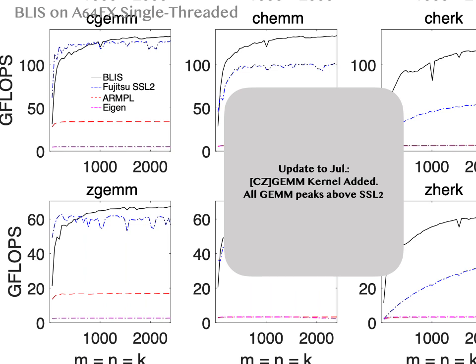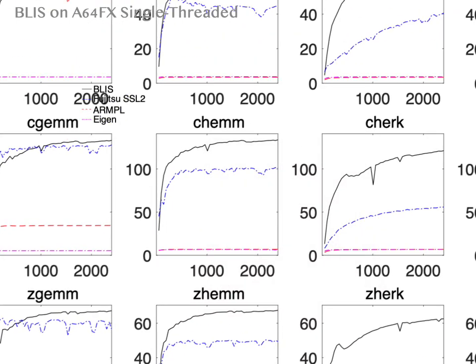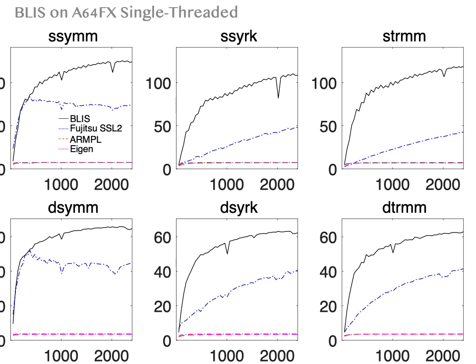This is an update to previously reported results from July. I've added complex-type kernels, CGEMM and ZGEMM, so that all GEMM operations have peak performance above the vendor BLAS SSL2. In the middle of the graph, we can see that because BLIS allows directly applying the GEMM kernel to symmetric matrix multiplication, symmetric rank-K updating, and triangular matrix multiplication — which vendor BLAS FUJI2 SSL2 does not — BLIS easily surpasses that vendor BLAS performance, basically by many times.